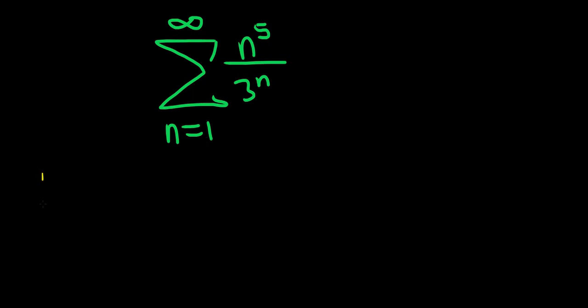The ratio test says we start by taking the following limit. So we have the limit as n goes to infinity of the absolute value of a sub n plus 1 over a sub n. If we get an answer that is less than 1, we get convergence. If we get an answer that is bigger than 1, we get divergence. And if we get 1, then we have no information.